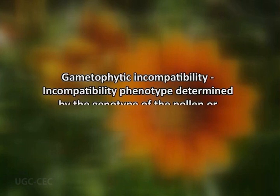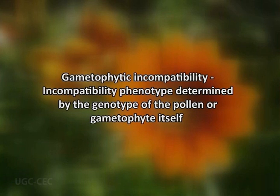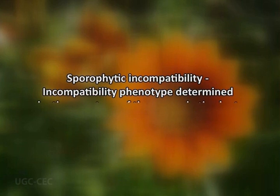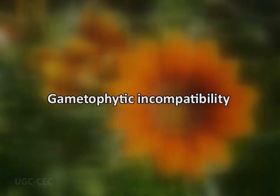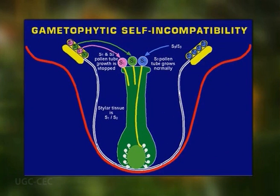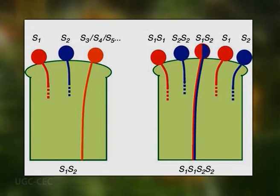In gametophytic incompatibility, the incompatibility phenotype is determined by the genotype of the pollen or gametophyte itself, while in sporophytic incompatibility, it is determined by the genotype of the sporophytic plant from which the pollen is derived. In species with the gametophytic incompatibility system, both compatible and incompatible pollen are allowed to germinate and grow pollen tubes into the style. However, the growth of incompatible pollen tubes is arrested in the style once it reaches one-third the length of the style.